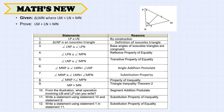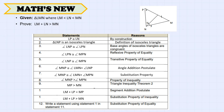Then MP is greater than MN by Triangle Inequality Theorem 2. From the illustration, LM plus LP equals MP by the segment addition postulate. Using statements 9 and 10, LM plus LP is greater than MN by substitution. Therefore, we have proved that LM plus LN is greater than MN by the substitution property.